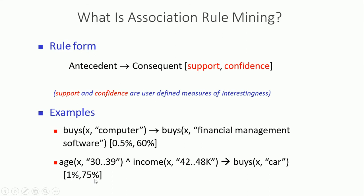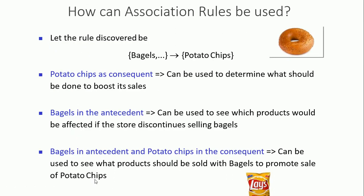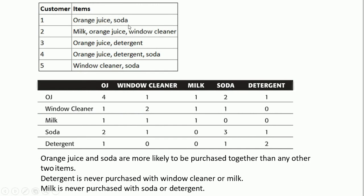Association rules can be used in practical scenarios. For example, bagels and butter: butter on the consequent side can be used to determine what should be done to boost bagel sales. Bagels as the antecedent can show which product would be affected if the store discontinued selling bagels. Bagels as antecedent and potato chips as consequent can show what products should be promoted together. Another example: customers buying orange juice and soda — if milk is never purchased with a certain item, you can find these patterns from the data.